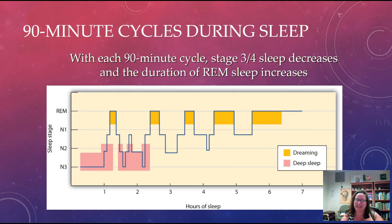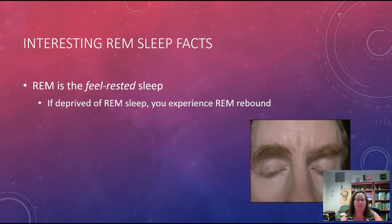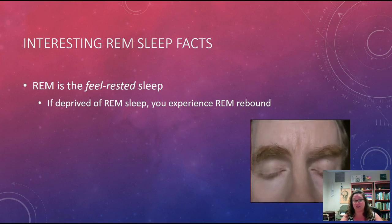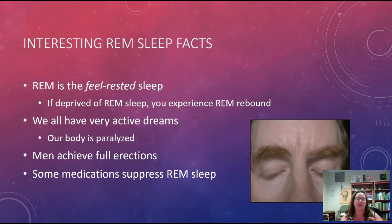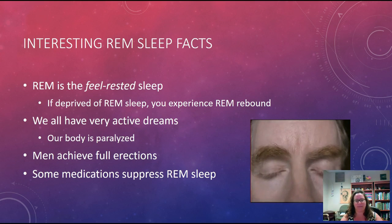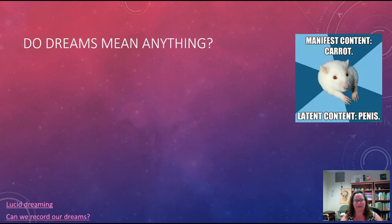We have 90-minute cycles during sleep. With each cycle, stages three and four deep sleep decreases and the amount of time in REM increases — so as the night goes on we spend more time in that dreaming state. REM sleep is what makes us feel rested. If deprived of REM, you'll experience REM rebound — the next time you sleep you enter REM much quicker. During REM our bodies are paralyzed, men can achieve full erections, and some medications suppress REM, which can impact feeling rested.